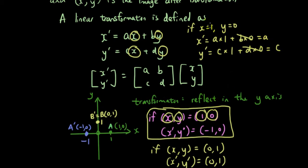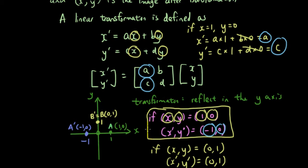Therefore, because we've found the image when x is 1 and y is 0, I can simply substitute the values I found for x' and y' into where a and c are in the transformation matrix. So a and c equal x' and y', which is negative 1 and 0.